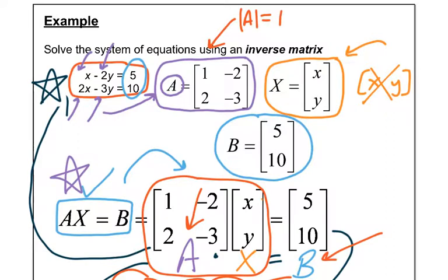So that means A inverse, once I scramble the matrix, should be 1 over the determinant. And my scrambled matrix, the 1 and negative 3 flip places. And the negative 2 and 2 just change signs. And since I'm just multiplying by 1, that doesn't really change anything. So my A inverse is negative 3, 2, negative 2 and 1.